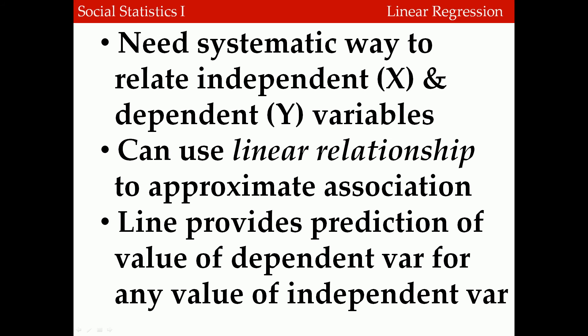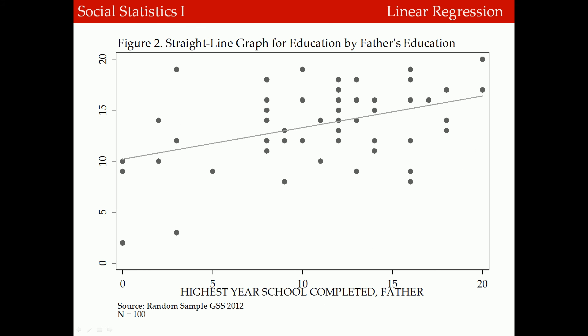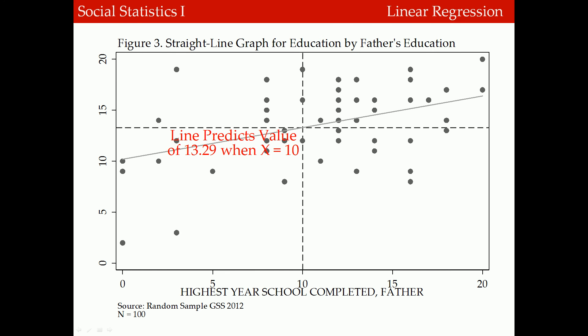We need a more systematic way to relate the value of the independent variable x and the dependent variable y. In linear regression modeling, we can use a linear relationship to approximate that association — a line that provides a prediction of the dependent variable for any given value of the independent variable. For example, if a father has 10 years of education, the line predicts the respondent would have about 13.29 years of education.